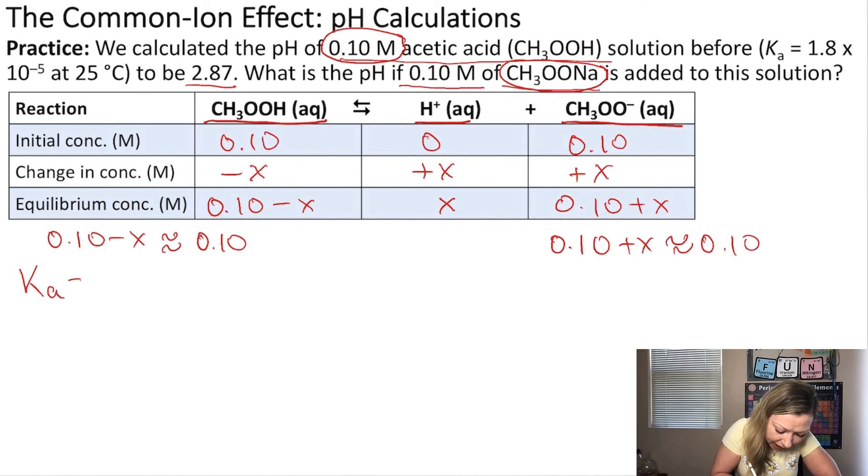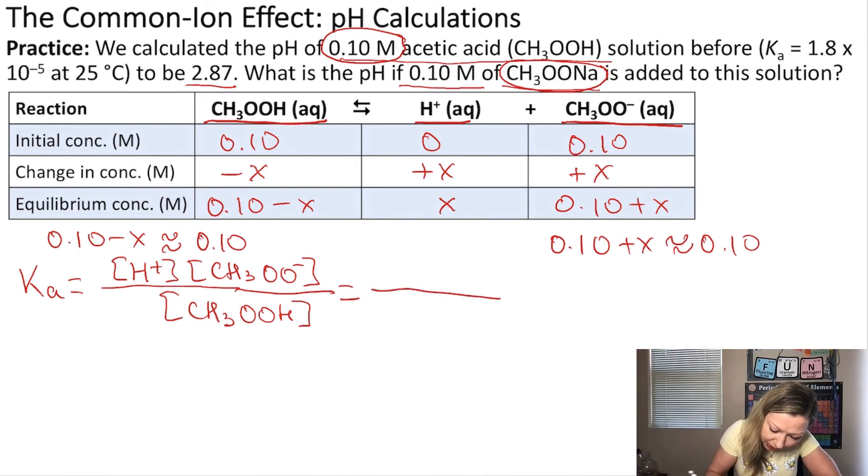So Ka equals, the products are on the top, so H+ ion concentration multiplied by the acetate ion concentration CH3COO- divided by the acetic acid concentration. Now I can plug in the values. The H+ ion concentration is X, I'm going to multiply that by 0.10, and divide that again by 0.10.